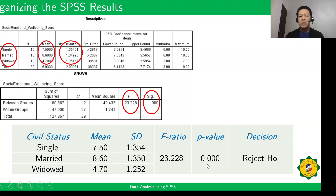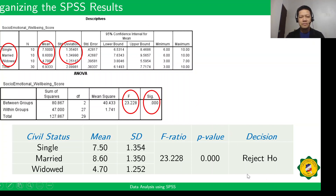Since the probability value of 0.000 is less than our 0.05 level of significance, we reject the null hypothesis H0. That is how to create a table from the SPSS output.